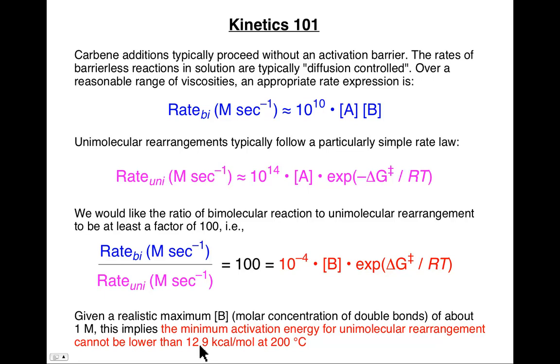And so, if you work out what must delta G double dagger be if T is 200 degrees Celsius in order to meet this 100 criteria that 99 times I get reaction and only one time do I self-destruct, I can't have a rearrangement barrier that's lower than 12.9 kcal per mole. But remember that in the hydrocarbon case, not the fluorocarbons but the hydrocarbons, there were two such rearrangements that were below 12.9 and the methyl shift was pretty close to 12.9. So, the hydrocarbon would be a disaster. It would entirely self-destruct. You'd never expect to see cyclopropanation. What about the fluoro case?